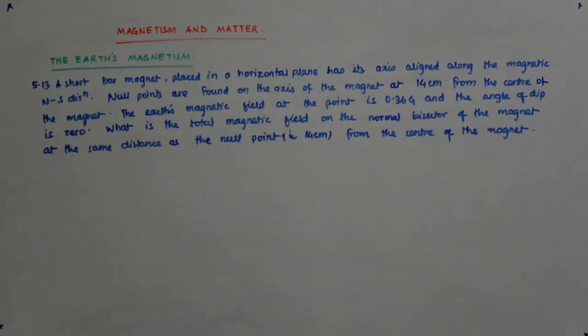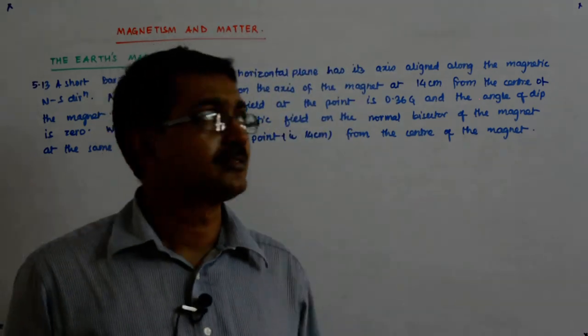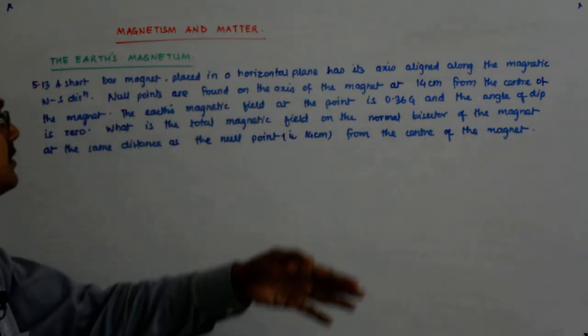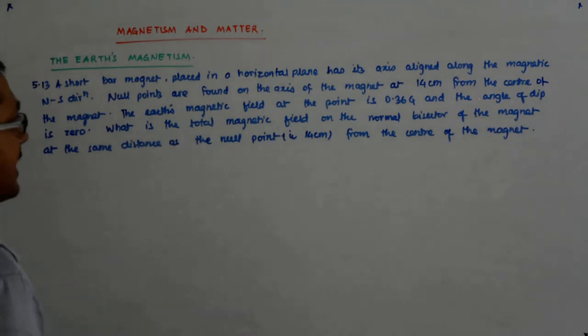Let us solve this question number 5.13. Here it says that there's a short bar magnet placed in a horizontal plane that has its axis aligned with the magnetic north-south direction.